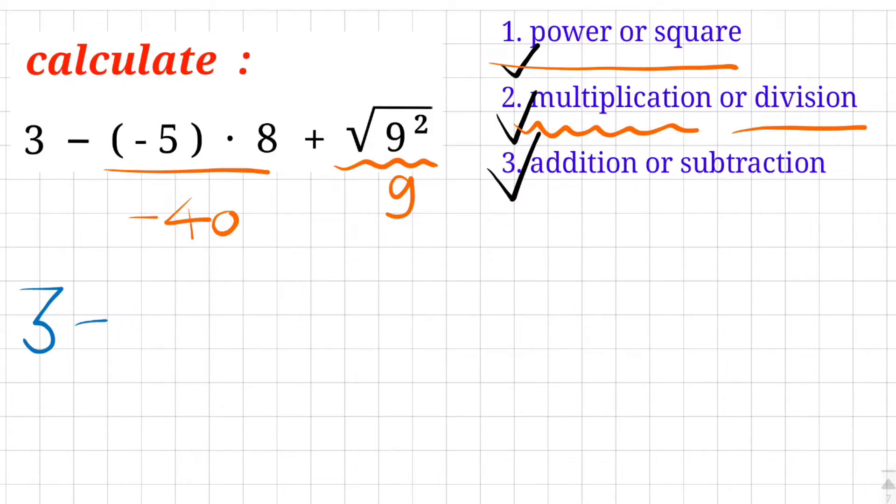3 minus, here is minus 40 and we put a bracket here. Because here appears two signs, both are minus. And here is plus. Square root of 9 square is 9, we've already done it.